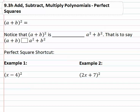In this video we're going to take a look at an important shortcut for multiplying what's called the perfect square where we have some binomial, maybe a plus b that is squared.